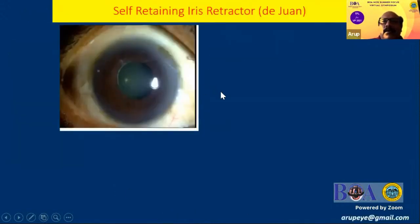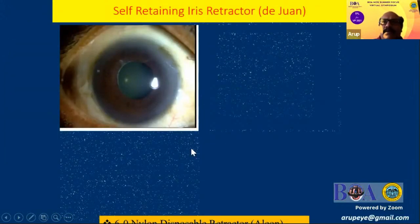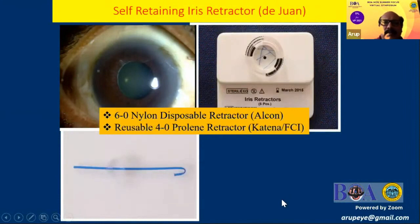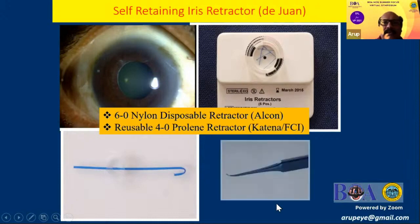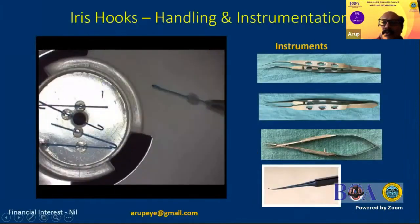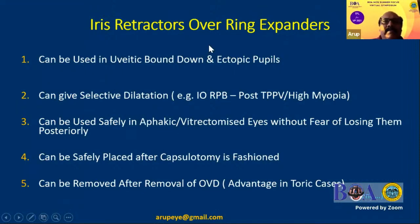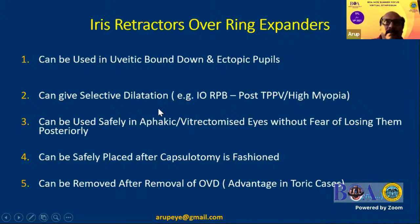Among all the devices, I am a big fan of iris hooks for various reasons. These are disposable devices, very simple to use — you just need a 27-gauge needle to manipulate them into the eye. Why do I prefer iris retractors over ring expanders? You can use them even in uveitic patients with posterior synechiae where the pupil has become ectopic. They allow selective dilation — for example, during vitrectomy with reverse pupillary block or lens-iris diaphragm retropulsion syndrome, I can gently lift the iris from the anterior lens capsule to prevent shallowing of the anterior chamber.